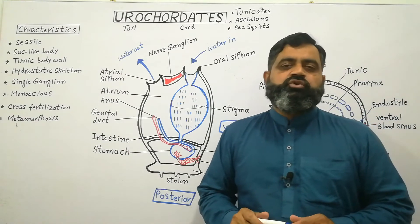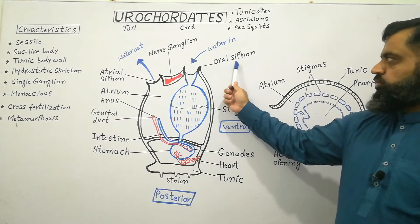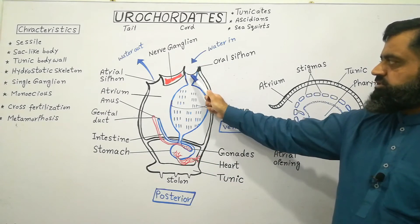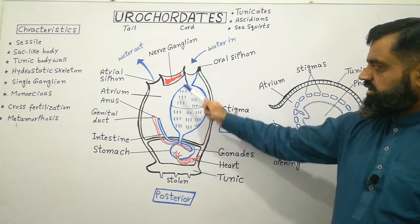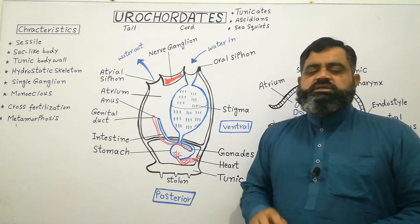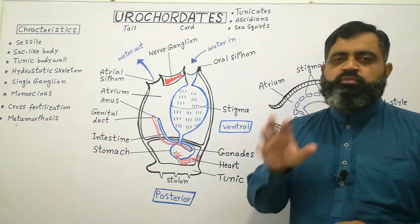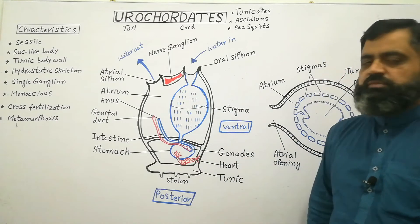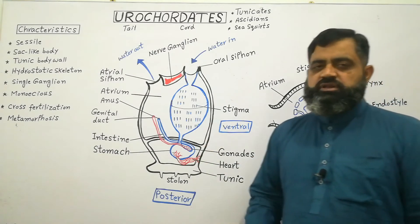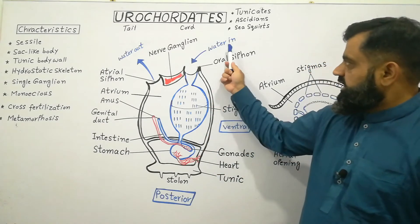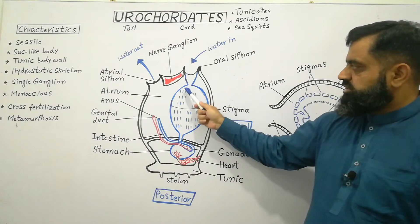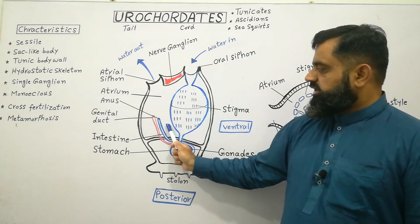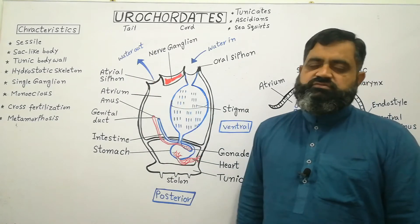The second major system is the digestive system. There is an oral siphon through which water enters the body, leading into the mouth, which leads into a sac-like pharynx, as you can see in the blue diagram. This pharynx occupies most of the body of the animal and contains small slits on its surface known as stigmata, which have fine openings through which water leaves the pharynx. Water enters through the oral siphon into the pharynx, passes through the stigmata into a cavity known as the atrium, and from the atrium leaves the body through the atrial siphon.